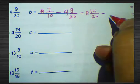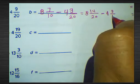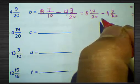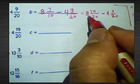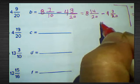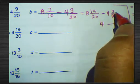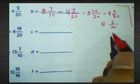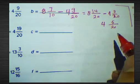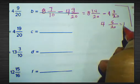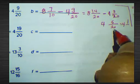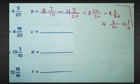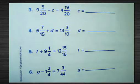Now we have 8 and 14 over 20 subtract by 4 and 9 over 20. Find the difference: 8 minus 4 equals 4, and 14 minus 9 equals 5, over 20. Simplify 5 over 20 by dividing by 5: 5 divided by 5 equals 1, 20 divided by 5 equals 4. The result is 4 and 1 over 4.